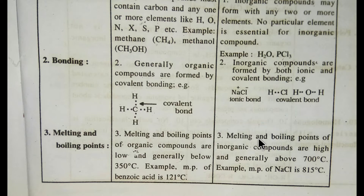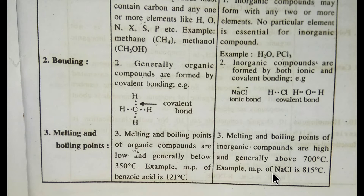In the case of inorganic compounds, melting and boiling points are higher and generally above 700 degrees Celsius. For example, the melting point of sodium chloride is 815 degrees Celsius, which is higher than 700 degrees Celsius.